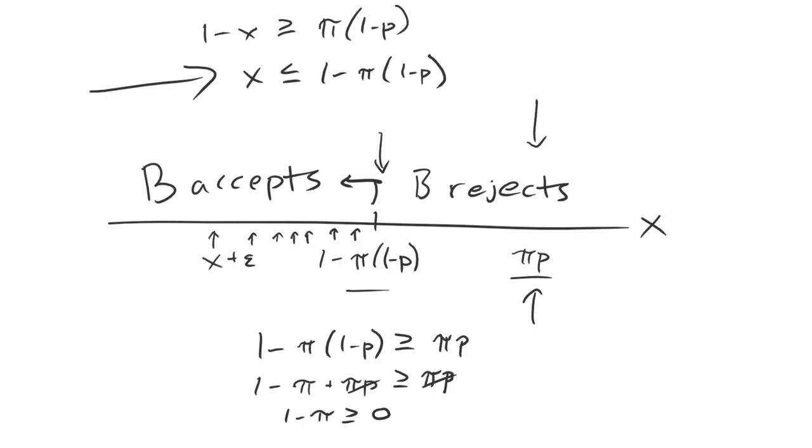So that is what we're going to expect. A is going to demand 1 minus pi times 1 minus P, and B will accept.